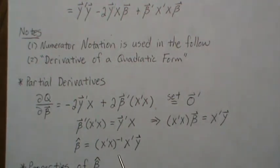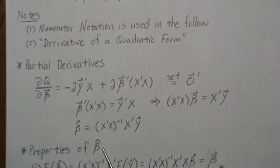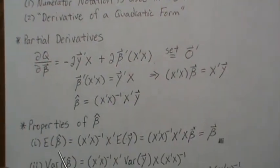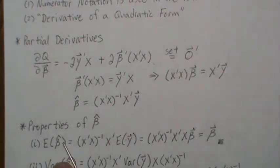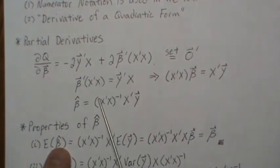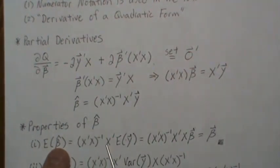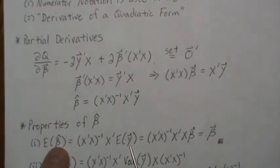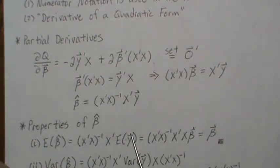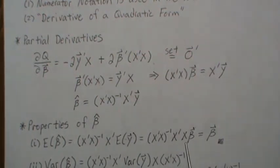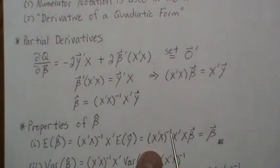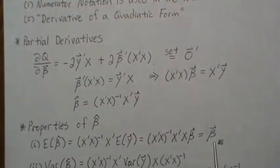This is exactly what we derived in the simple linear regression setting. Now let's look at the properties of our least squares estimates — beta hat. The expected value of beta hat: since the X's are constant, they come out front of the expectation and we just need the expected value of Y. The expected value of Y is X beta, and then X transpose X inverse times X transpose X gives the identity, so the expected value of beta hat is just beta.